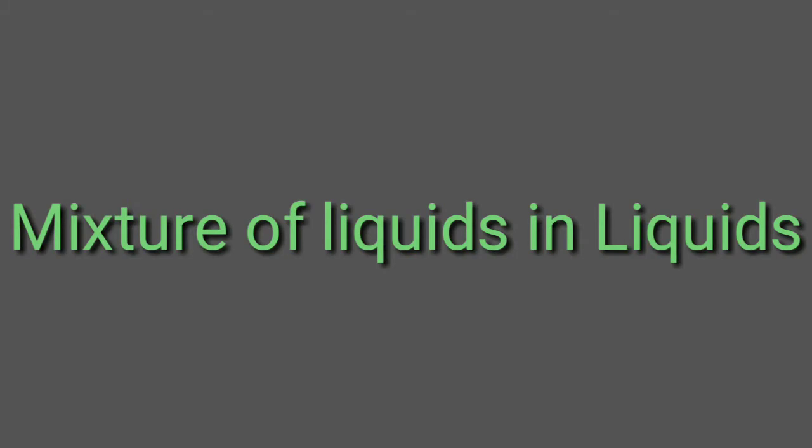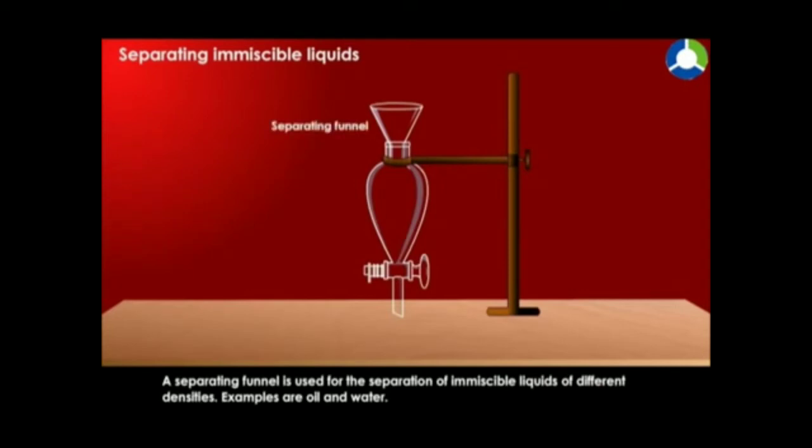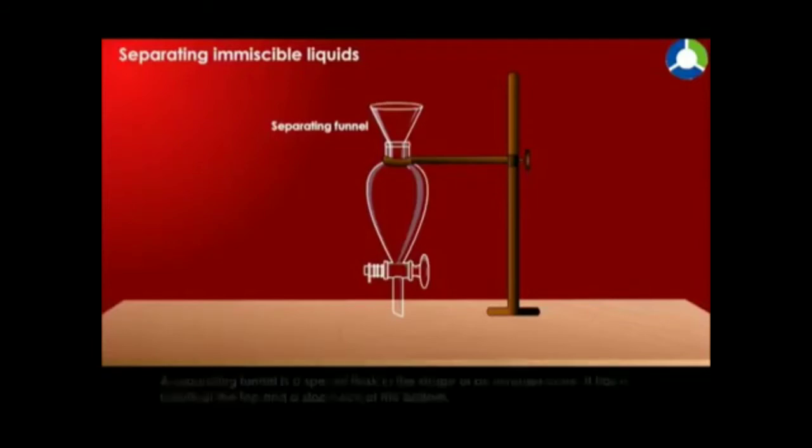Mixture of liquids and liquids. First, separating immiscible liquids. A separating funnel is used for the separation of immiscible liquids of different densities. Examples are oil and water.